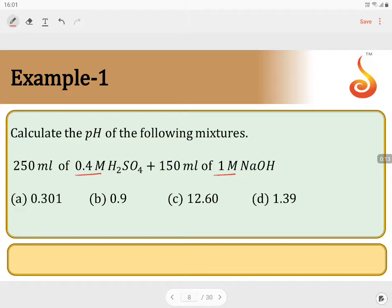When finding out the resultant concentration, try to convert them into normality. This will be 0.4 into 2, which equals 0.8 normal. And for NaOH, molarity equals normality, so 1 normal.